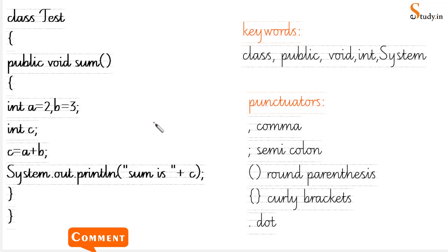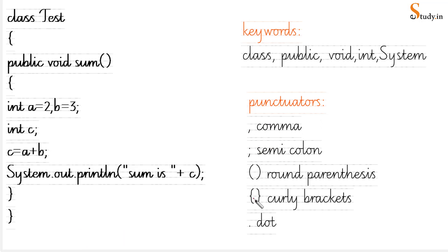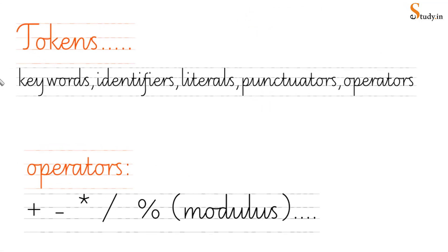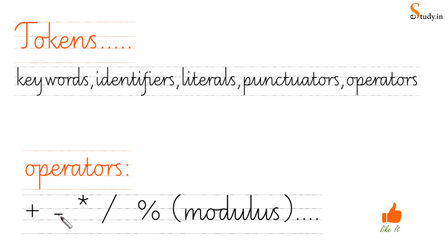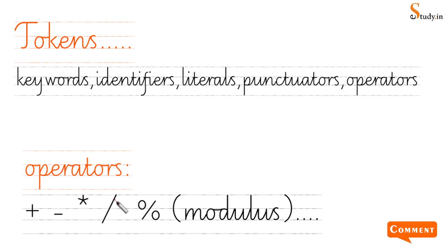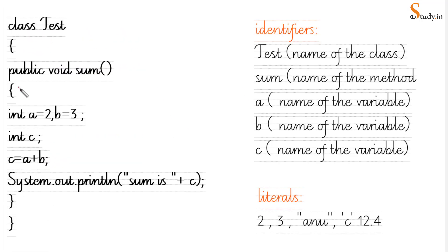What are punctuators? We have a semicolon, a comma separating two variables, round brackets, curly brackets, and a dot — these are all punctuators. Now, what are tokens? Tokens are the combination of everything: keywords, identifiers, literals, punctuators, and operators. Operators include plus, minus, the asterisk for multiplication, the slash for division, and the modulus operator.